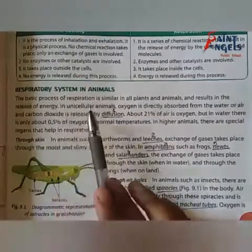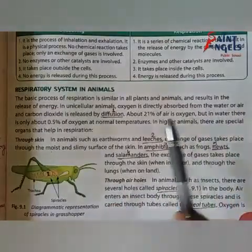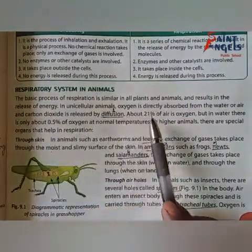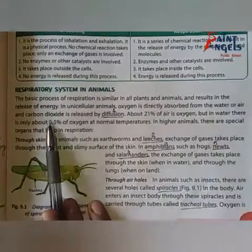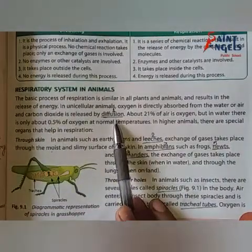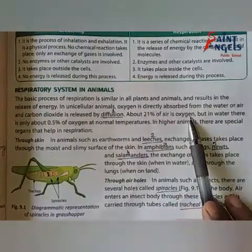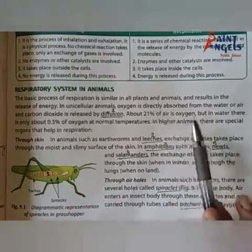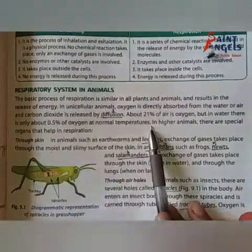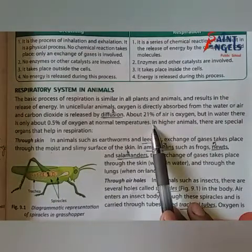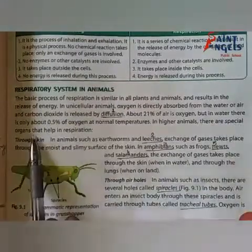All living things release energy through respiration. In unicellular animals, oxygen is directly absorbed from water or air, and carbon dioxide is released by diffusion. In water, there is only about 0.5% of oxygen at normal temperature. In higher animals, there are special organs that help in respiration.